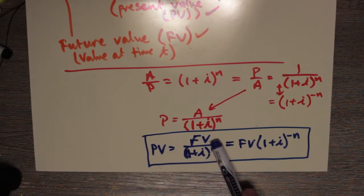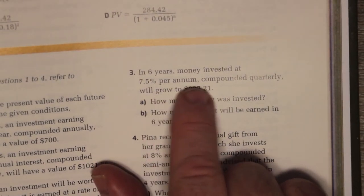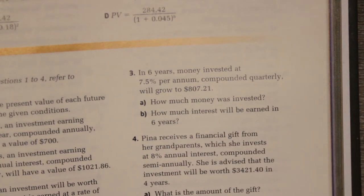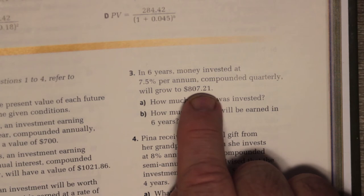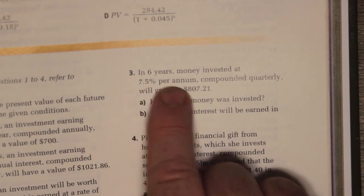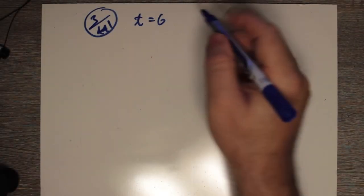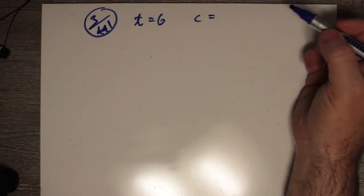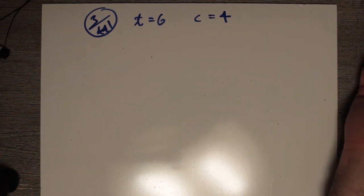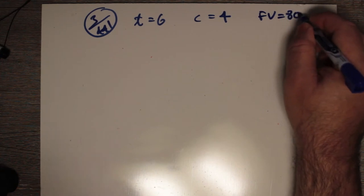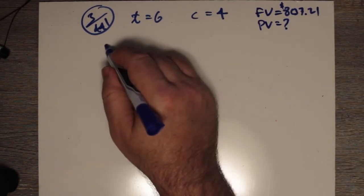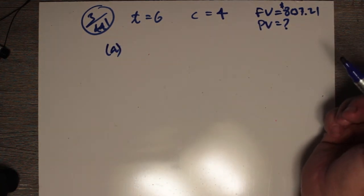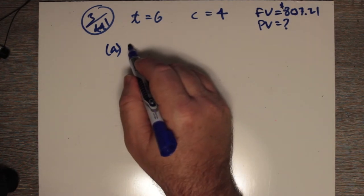Question 3 in the text says that in six years, money invested at seven and a half percent per annum compounded quarterly will grow to eight hundred seven dollars and twenty-one cents. How much money do you need to invest now? Our time is six years, compounding periods per year is quarterly — so four per year — and the future value is $807.21. We need to calculate the present value.